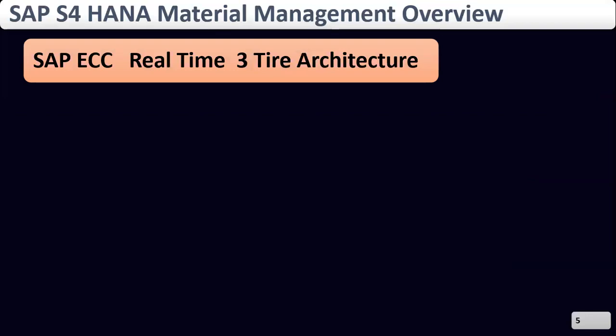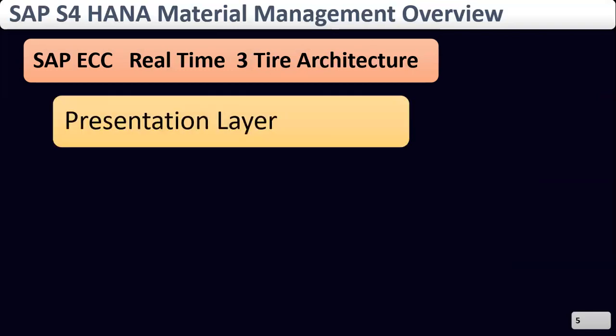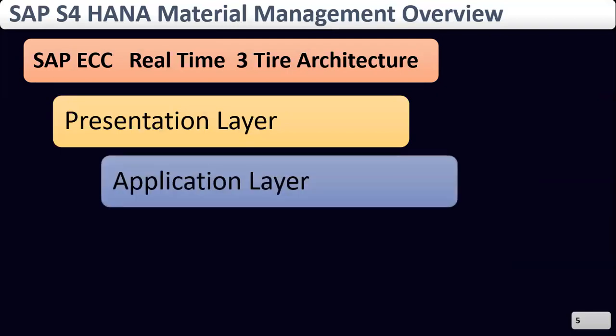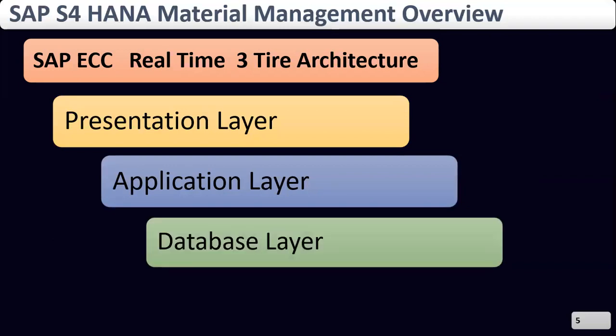Now we are going to discuss the three-tier architecture. The first layer is the presentation layer, the second is the application layer, and the third is the database layer.